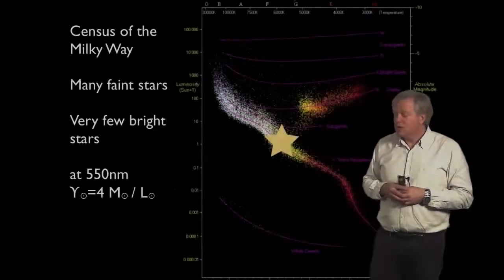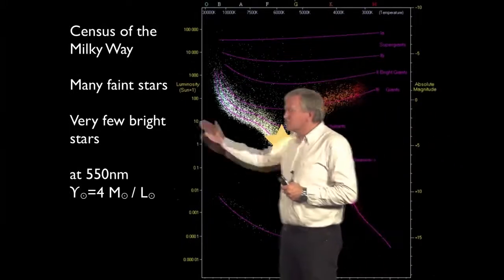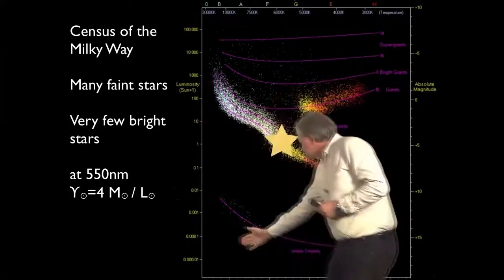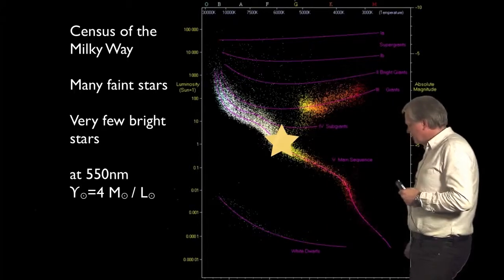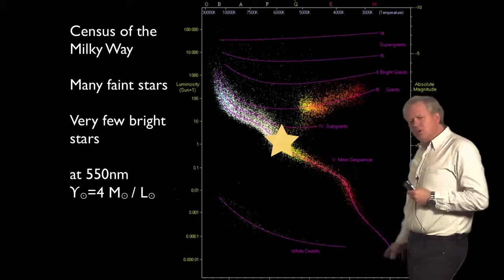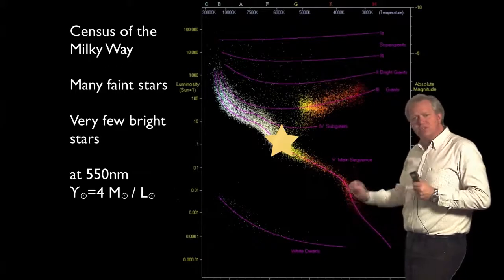So what do we see when we look at our own Milky Way? So this diagram plots how bright stars are versus their temperature. And it turns out you can also, with this, measure the mass of a star. So this is known as a Hertzsprung-Russell diagram.